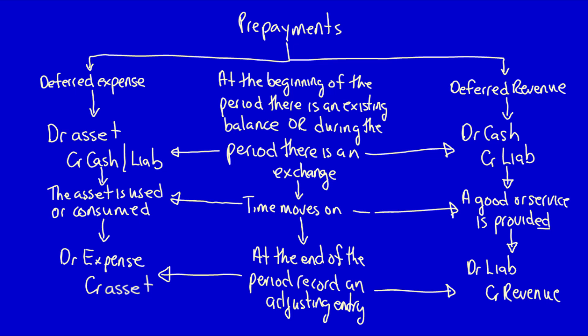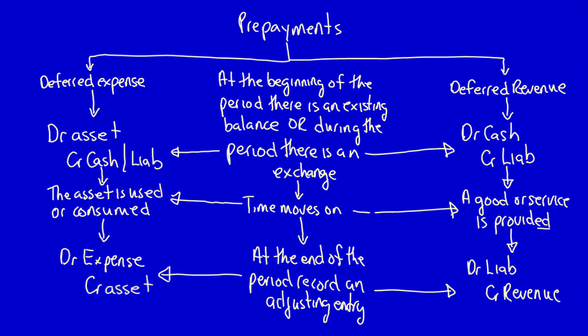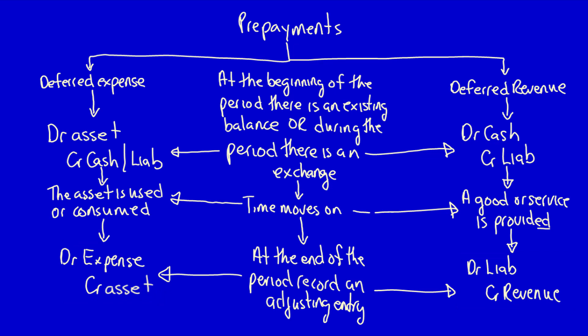Can you see the similarities? In both cases there may be an existing balance at the beginning of the period or an exchange between two parties during the period. Then as time moves on, the company does something — either they use or consume an asset, or they provide a good or service to the customer. At the end of the period, because the balance sheet is no longer correct, we have to either recognize that use or consumption, or recognize the earning of revenue. This is called the balance sheet method because balances are held on the balance sheet as assets and liabilities until adjustments are needed.